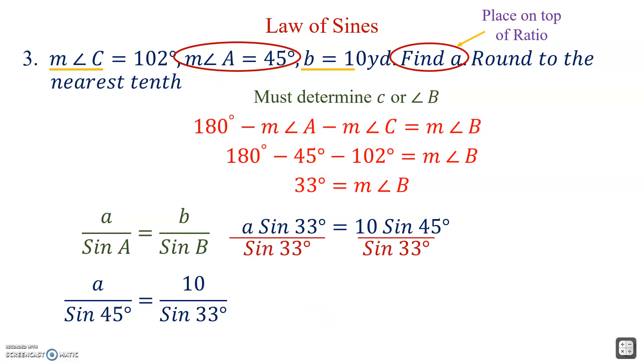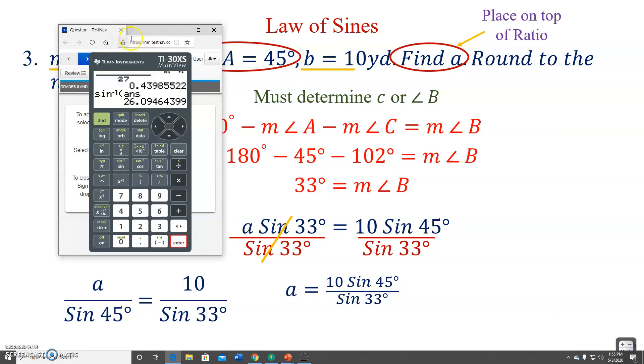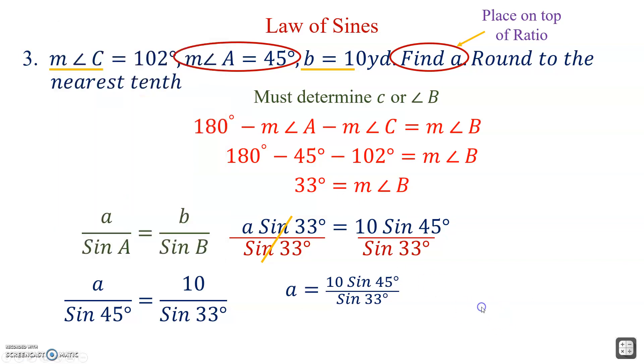Cross multiply and that yields a sine 33 equals 10 sine 45. Get a by itself. Divide both sides by sine 33. This is what's going to go into the calculator. 10 sine 45 over sine 33. We got 10 sine 45 over sine 33. We get a little over 12, so 12.98ish. And because we're rounding to the nearest tenth, that gives us exactly 13.0. Because when we round appropriately, 13 is what it rounds to.